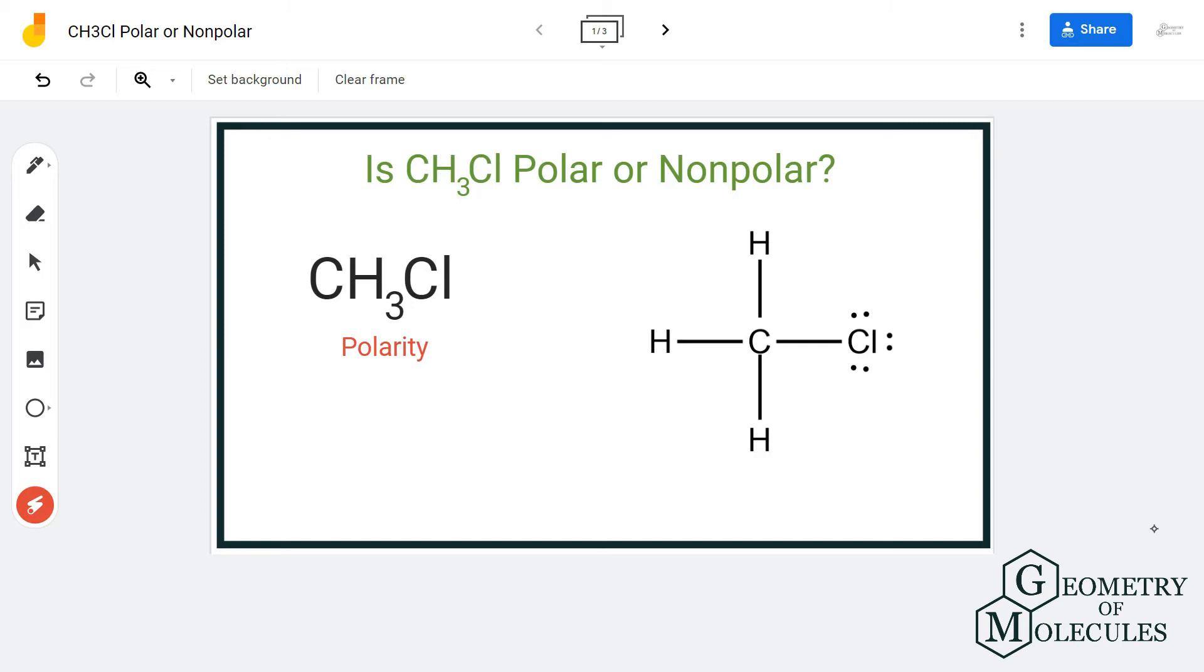But here, chlorine is the most electronegative atom in the molecule, which means the difference of electronegativities of chlorine and carbon is much higher. As chlorine atom is more electronegative, it will try to pull the shared electrons towards itself.